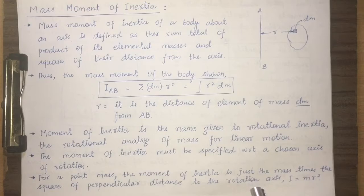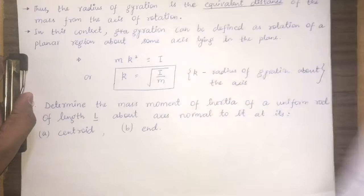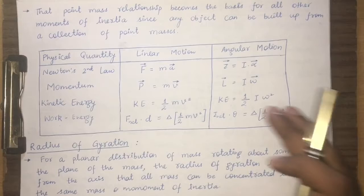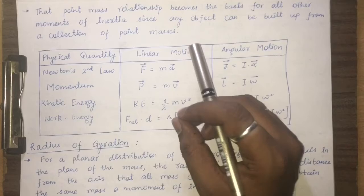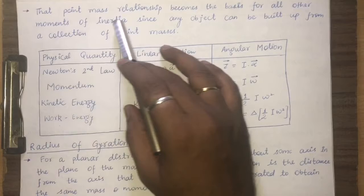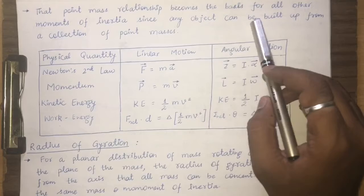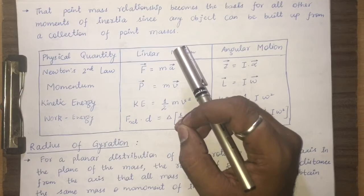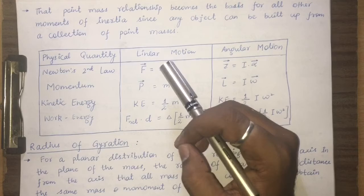For a point mass, the moment of inertia is simply the mass times the square of the perpendicular distance to the rotation axis. That point mass relationship becomes the basis for all other moments of inertia, since any object can be built upon a collection of point masses. The point mass is just like an elemental area or elemental mass — if you can define something for an element, you can expand it for the whole body.